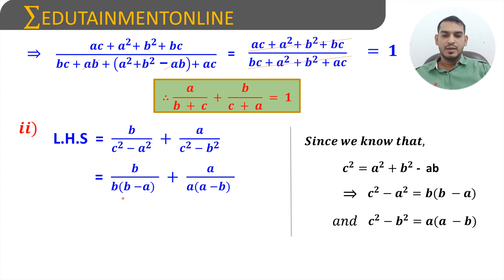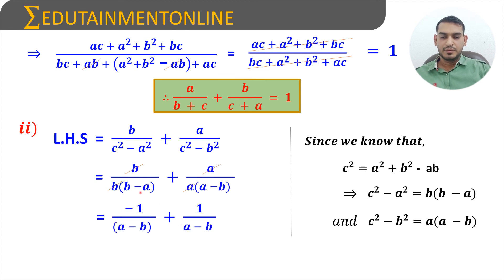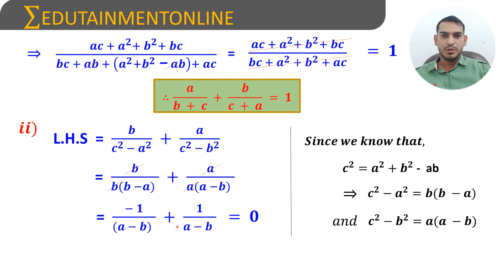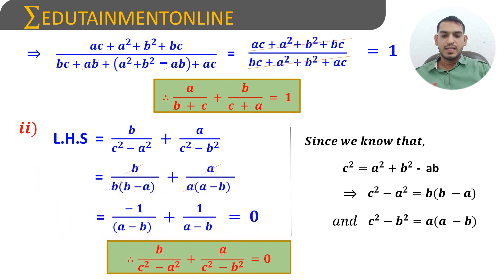The expression becomes b/[b(b-a)] + a/[a(a-b)]. Canceling b with b and a with a, we get 1/(b-a) + 1/(a-b). Taking minus common in (b-a): -1/(a-b) + 1/(a-b) = 0. Therefore, b/(c²-a²) + a/(c²-b²) = 0.